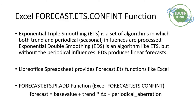ETS — Exponential Triple Smoothing — is a set of algorithms that predicts not only the trend but also periodic influences and seasonal behavior. Based on your actual values, if the periodic length is unknown or set to zero, the function acts as EDS — Exponential Double Smoothing — and produces a linear forecast instead.